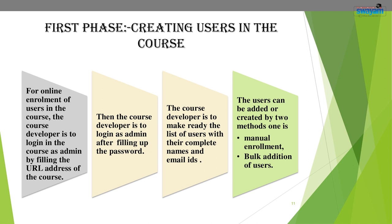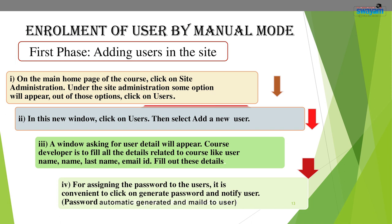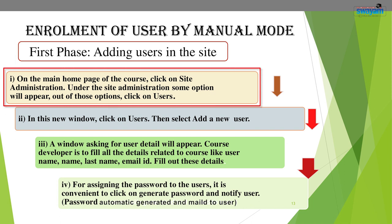Users can be added or created by two methods: manual enrollment, or bulk addition of users. For manual creation, on the main homepage of the course, click on Site Administration. Site Administration will appear on the left side at the bottom of the main Moodle site. Under Site Administration, some options will appear.